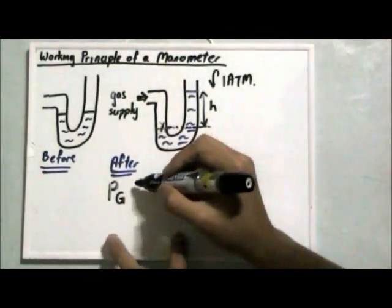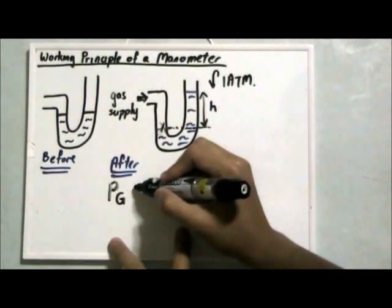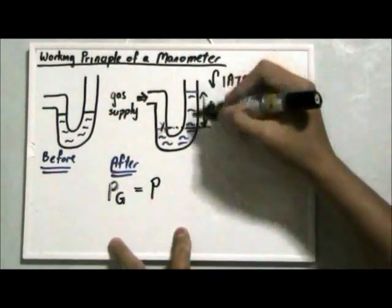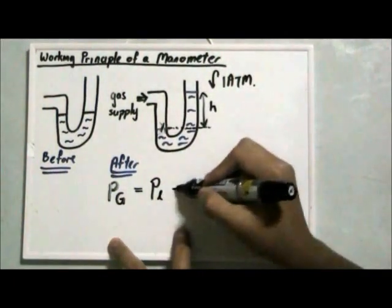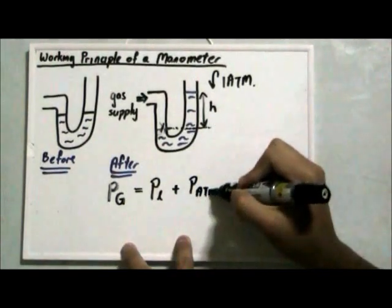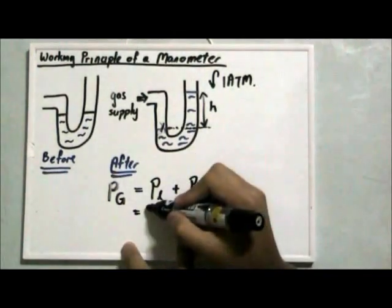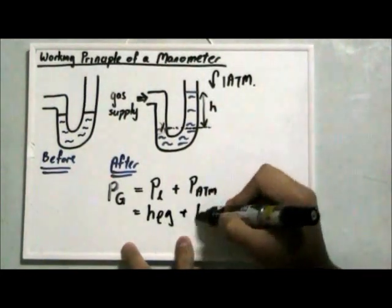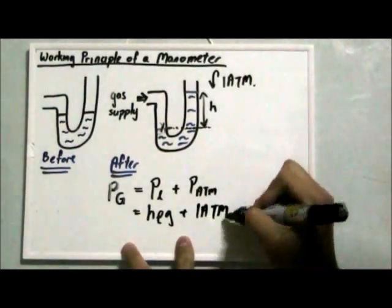We can say that the pressure of the gas is actually equal to the pressure of this column of liquid plus the pressure of the atmosphere. And the pressure of the liquid is H rho G plus 1 ATM.